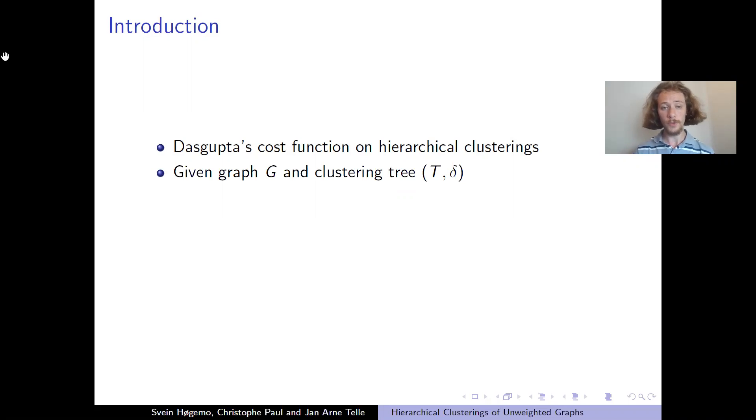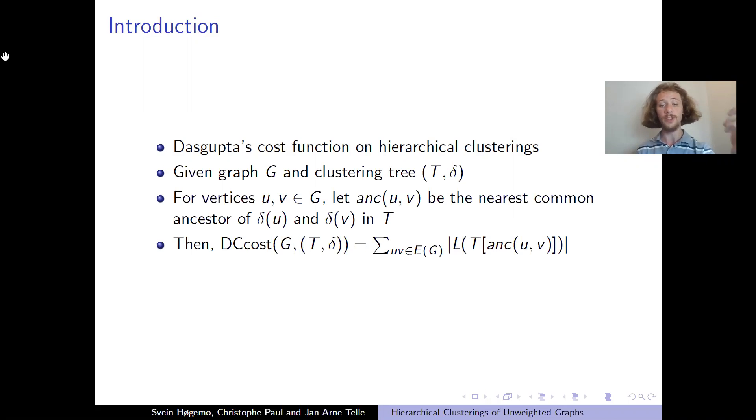Let's see the definition first. Given the graph G and some clustering tree, which we can visualize as a tree, and the function delta that goes from the vertices of the graph to the leaves of the tree, we define the function as, for each edge of the graph, we look at the size of the smallest subtree that includes both the vertices in the edge. And we sum together these sizes for all edges in the graph. This is for unweighted graphs. If we have a weighted graph, we just multiply it with the weight of the edge.